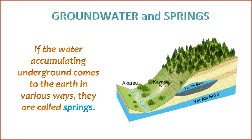Key features of springs include: 1. Origin of Water — springs are fed by groundwater that has percolated into the ground, often from precipitation, and then moved through the subsurface. 2. Formation — groundwater may follow natural pathways, such as fractures or permeable rock layers, until it reaches a point where it can exit at the surface. 3. Flow Characteristics — springs can vary widely in terms of flow rate. Some springs may have a steady flow, while others may be intermittent, flowing only during certain seasons or under specific conditions.